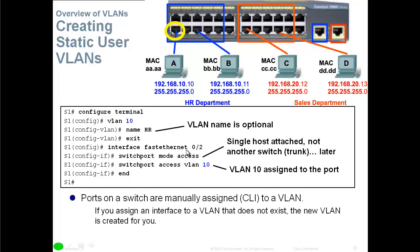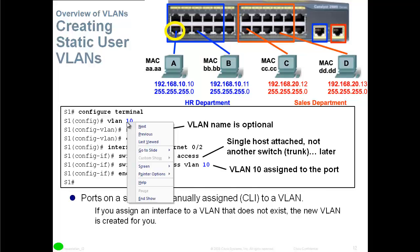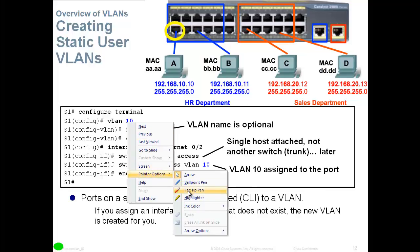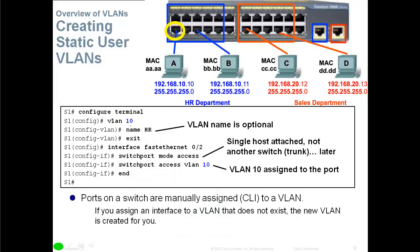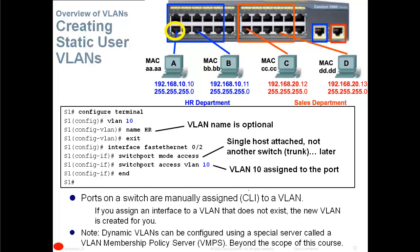Note: if you assign an interface to a VLAN that hasn't been created yet, the switch will automatically create that VLAN for you. Also note that dynamic VLANs can be configured using a special server called the VLAN Membership Policy Server (VMPS), but VMPS is not covered on the Cisco CCNA.